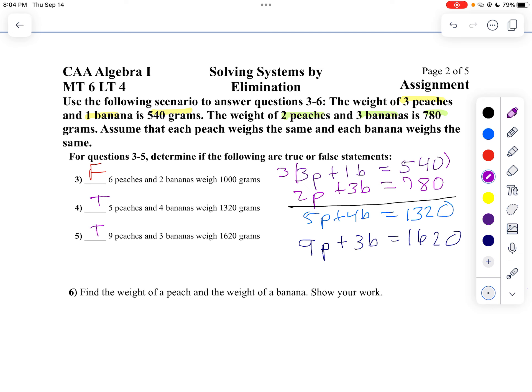Now, what am I going to do to do this by elimination? Let's go back. I'm going to copy down my first system. Three peaches plus one banana equals 540. And two peaches plus three bananas is 780. Well, notice three is a multiple of one, but I want them to be opposite. So I'm going to multiply the top equation by negative three.